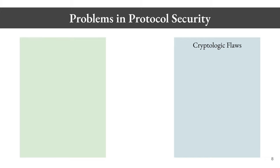Many protocols have cryptologic flaws — flaws arising from the cryptographic logic of the protocol. Many protocols have what my advisor Christina would call semantic bugs, which are the types of flaws studied in the field of LangSec or language security. These are flaws having to do with the parsing of input symbols to the language. You might have some data language that is processed by some program and that data language turns out to have more expressive power than intended, so an adversary able to control some part of the input data can manipulate the entire system.